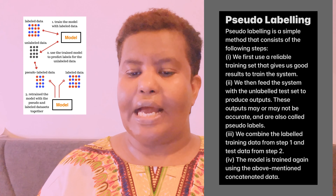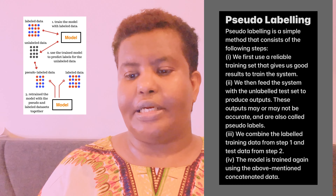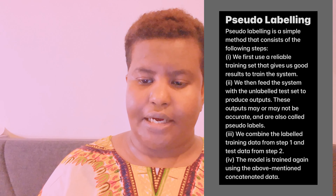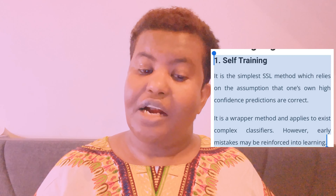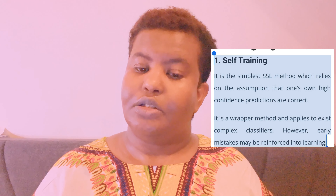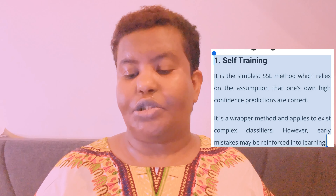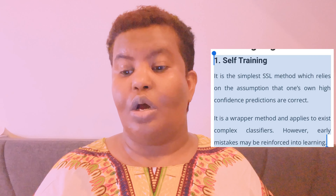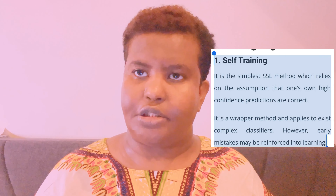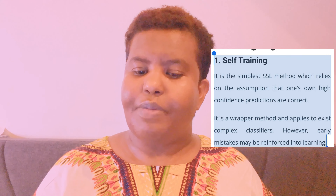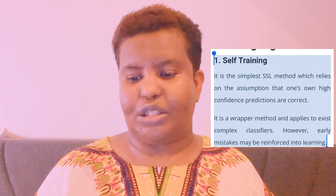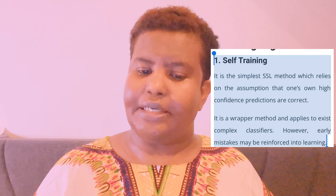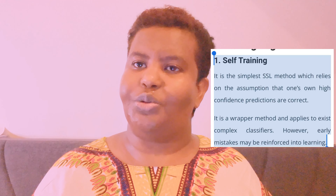The model is then trained again using the above-mentioned concatenated data. Semi-supervised learning algorithms include self-training, generative models, and low-density separation. Self-training is the simplest semi-supervised learning method, which relies on the assumption that one's own high-confidence predictions are correct. It is a rare method and applies to existing complex classifiers. However, early mistakes might be reinforced into the learning.